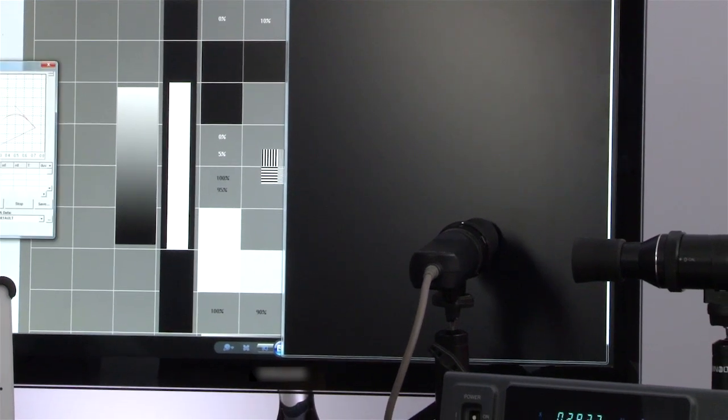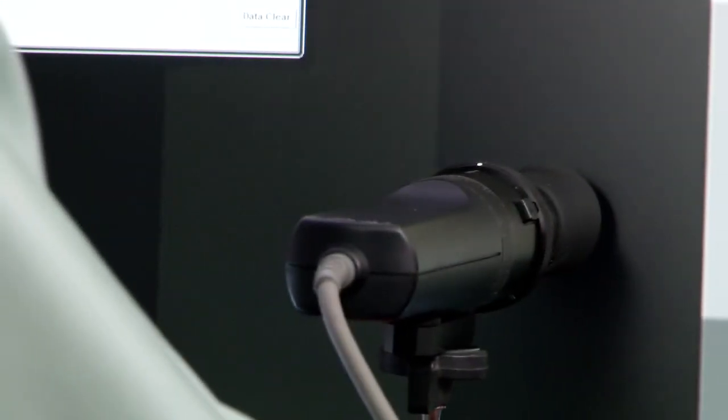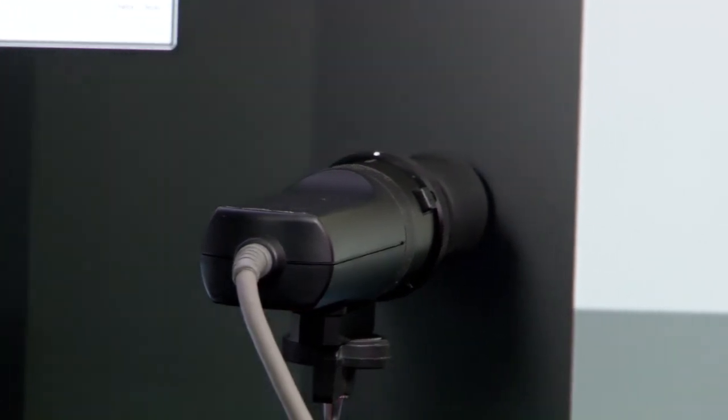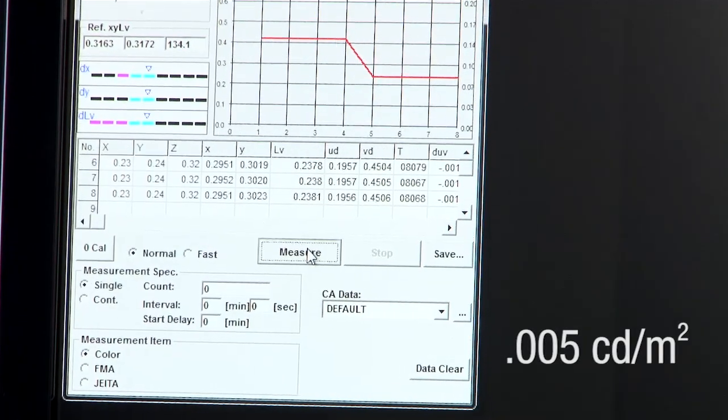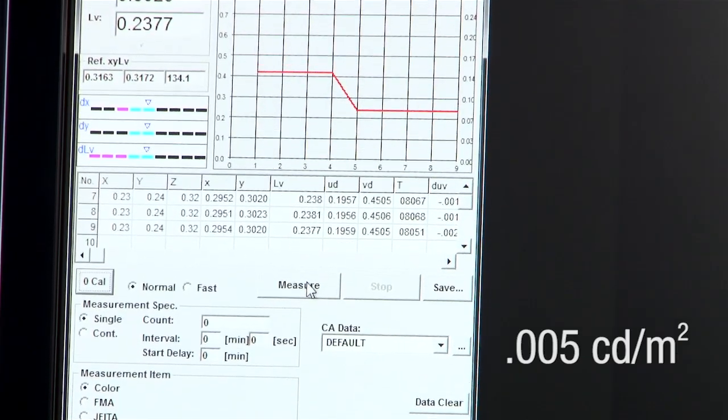With improved low-intensity measurements, the CA310 now measures down to .005 candelas per meter squared, an improvement when measuring contrast ratio.